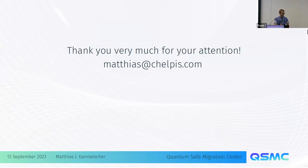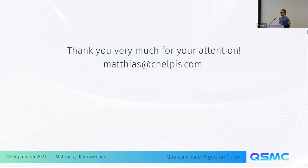Thank you so much, Matthias. I think we have time for one question. [Audience]: You said in order to use a different field representation you'd need to change the spec, but mapping between representations seems like a cheap operation. Is the advantage so small it's not worth it? [Matthias]: It's a really tiny advantage — we have a paragraph on that in the paper. We considered it but it's not worth it. And on M4, you really don't want the tower field — there the difference is bigger.